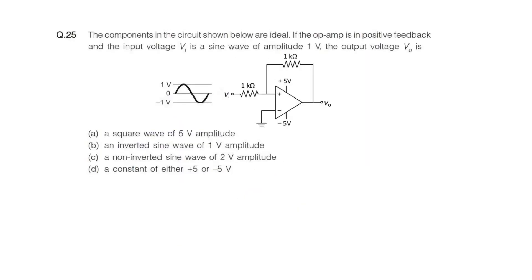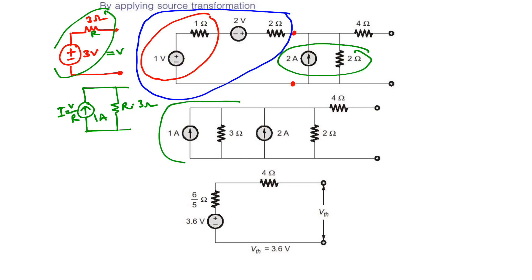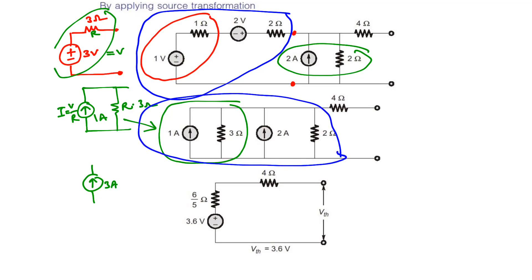Replacing the blue color box, you get this circuit. With 2 amperes and 2 ohms, the current sources get added: 1 ampere plus 2 amperes becomes 3 amperes. Then 3 ohms and 2 ohms are in parallel. The parallel combination is R1·R2/(R1+R2) = 3×2/(3+2) = 6/5 ohms.